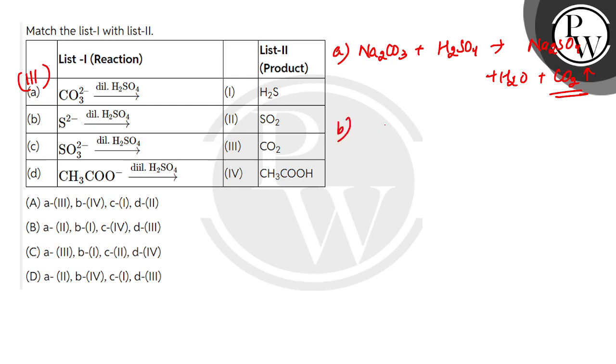B, we have sulfide. We have sodium sulfide with dilute H2SO4. So again we have a reaction here. What will we get? Na2SO4 plus H2S. So H2S gas will pass. So B will match with first.